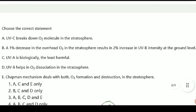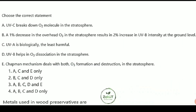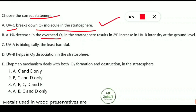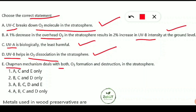The next question covers ozone and UV radiation. All of the following are correct statements: (A) UVC breaks down oxygen molecules in the stratosphere; (B) a 1% decrease in overhead ozone results in a 2% increase in UVB intensity at ground level; (C) UVA is biologically the least harmful; (D) UVB helps in ozone dissociation in the stratosphere; (E) the Chapman mechanism deals with both ozone formation and destruction in the stratosphere. All options A–E are correct, so option 3 is the answer.